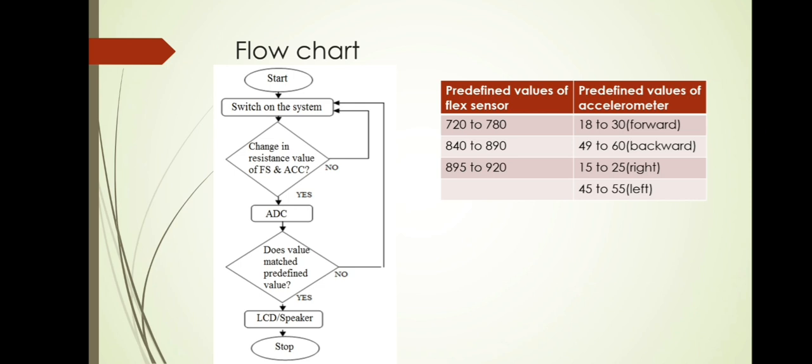This flowchart shows the working of our device. Whenever we start the system, the resistance of flex sensor and accelerometer will start changing and it is fed to A2D converter. A2D means analog to digital converter. It will convert analog output into digital. If not changed, it will check again and again. After this, output of analog to digital converter will match the predefined values which is shown beside the flowchart. If predefined values matched, the output will come from speaker. If not matched, it will check again.